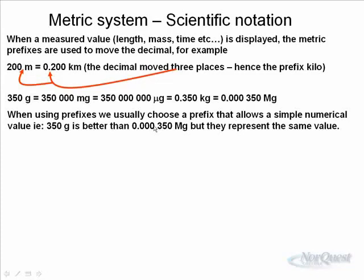350 grams, if we use the same argument, by putting milli in front of the grams, milli is 10^-3, we move the decimal from in front of the first zero to in front of the fourth zero. Micro means 10^-6, so we move the decimal six places. And kilo, because kilo is large, we have to move the decimal the other way. When using prefixes, we usually choose a prefix that allows a simple numerical value. 350 grams is better than 0.000350 megagrams. They're the same value, but one is much easier to understand.